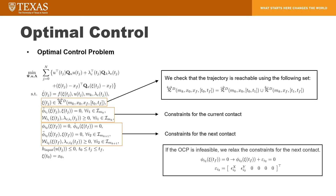Based on the computed reachable set, we can test if our states are reachable over a finite time horizon. Then we solve the formulated optimal control problem to generate a trajectory to change the contact mode. As a result, we can modify our foot trajectories for the whole-body controller.